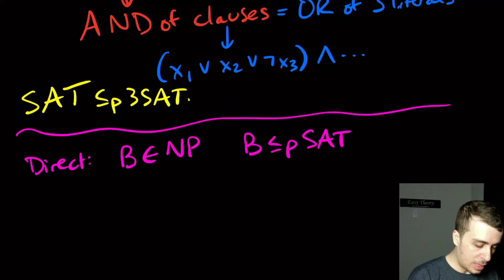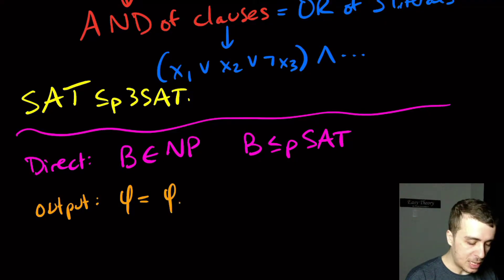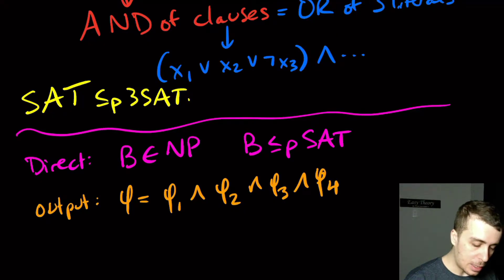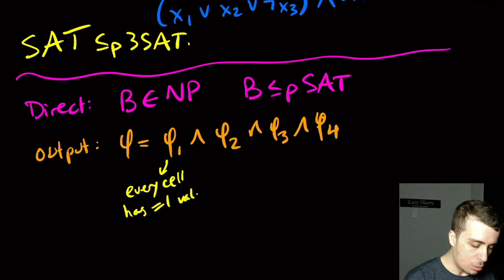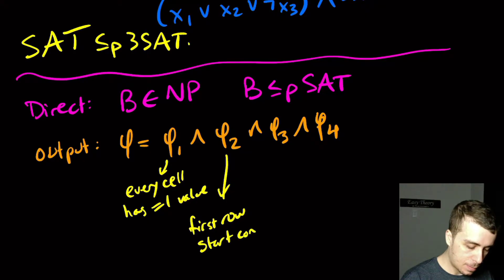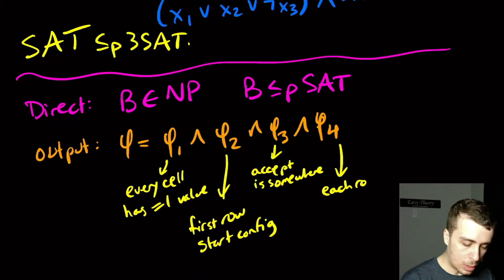We had this language B in NP, and we showed before that P reduces to not 3SAT, but just the general SAT problem. We were given some Turing machine, and the output for the SAT problem was a formula φ, which is an AND of four smaller formulas. φ1 said that every cell has exactly one value in the tableau. φ2 was that the first row is the start config. φ3 is that the accept is somewhere in the whole machine. And φ4 was that each row yields the next one.